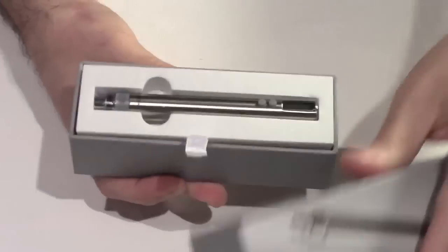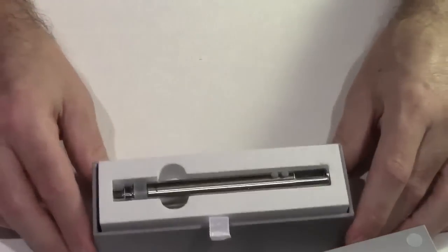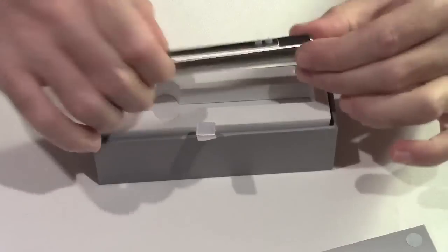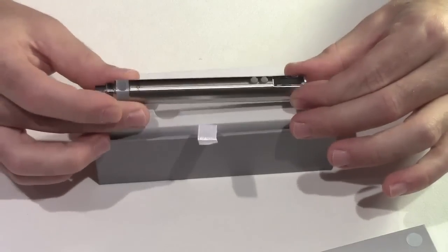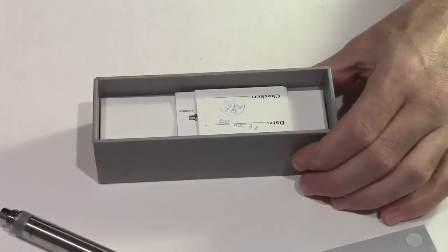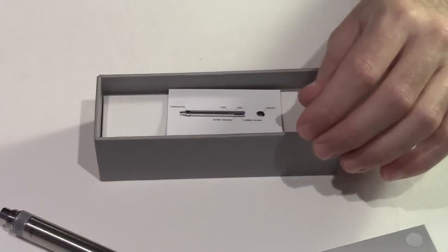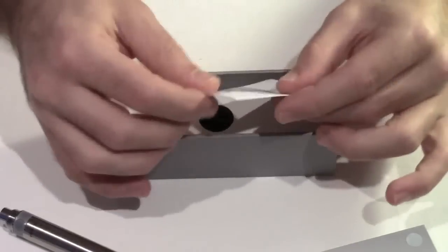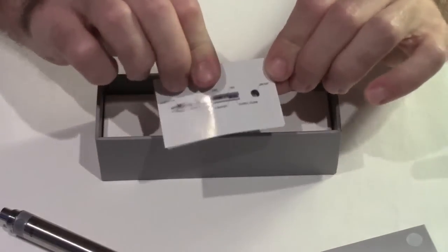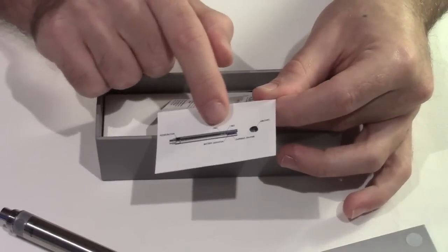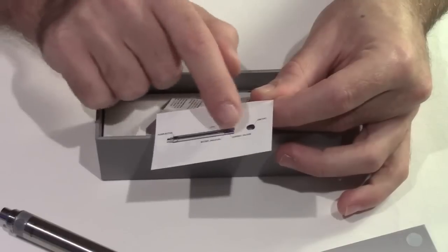Andando ad aprire la confezione al suo interno come prima cosa c'è la batteria che si presenta bene e che poi andiamo a vedere nel dettaglio. Poi sotto abbiamo il certificato di garanzia che è stato approvato il prodotto che è stato controllato. Piccolo manuale piccolissimo di istruzioni dove vengono indicate cosa sono le funzioni dei tasti, il led.